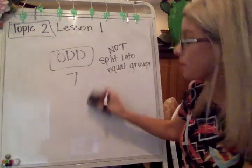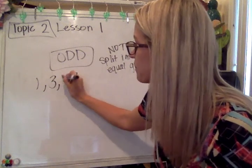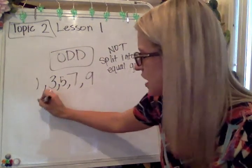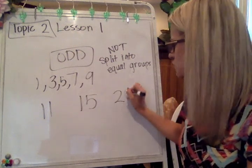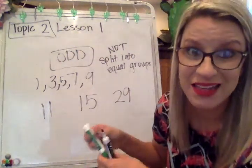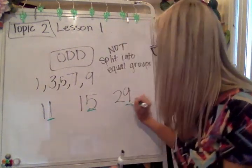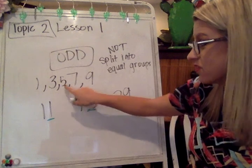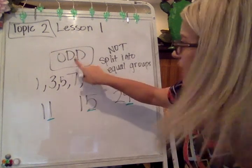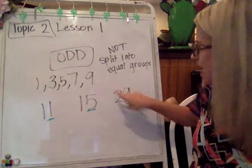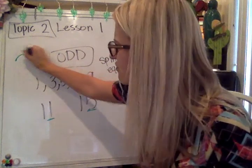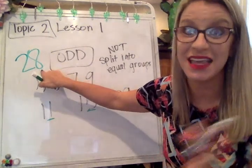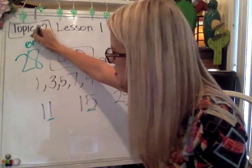Numbers that are odd have a one, a three, a five, a seven, or a nine in the ones place. So any number — like eleven, fifteen, or twenty-nine — all I really need to look at is the ones place. The number eleven has a one in the ones place, so I know it is odd. The number fifteen has a five in the ones place, so I know automatically it is odd. The number twenty-nine has a nine in the ones place — I know that it is odd. If I had the number twenty-eight, it has an eight in the ones place: two, four, six, eight. Since I can count by twos to get to that eight, I know that number has to be even.